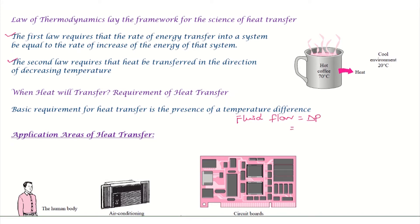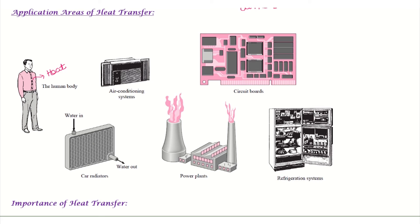Just as fluid flow requires a pressure difference and current flow requires a voltage difference, heat transfer requires a temperature difference — the same concept. A good example is the human body: the body constantly rejects heat. The rate of heat rejection varies in different environments, and we control that heat rejection — for example, through air conditioning or refrigeration systems.